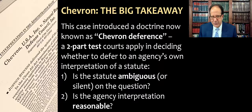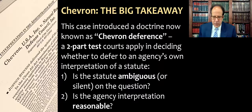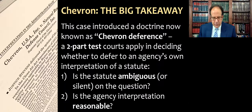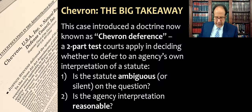Here are the two parts. Number one: is the statute ambiguous or silent on the question? If so, then we go to step two and ask: is the agency interpretation reasonable? That means the court is not going to substitute its own policy opinions or preferences. If we get to step two, the agency is probably going to win.